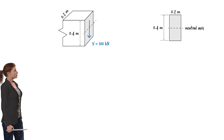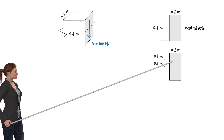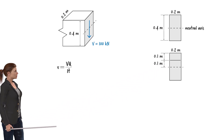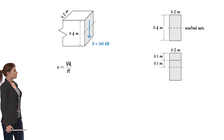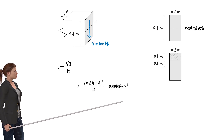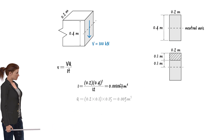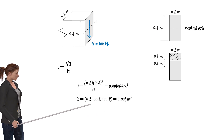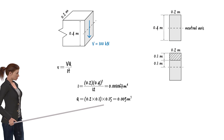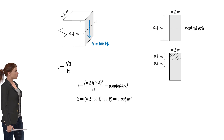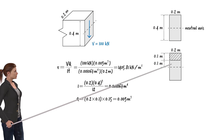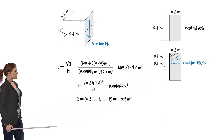Suppose we wish to determine the shear stress acting on the surface of the beam's cross-section along a specific line. Using the shear stress equation: V, the shear force, equals 100 kN; I, the moment of inertia about the neutral axis, is calculated accordingly. Q is the moment of the shaded area about the neutral axis. The shaded area equals 0.2 times 0.1, and the distance from the center of the area to the neutral axis is 0.15 meters. Substituting these values, the shear stress along this line equals 1,406 kN per square meter.